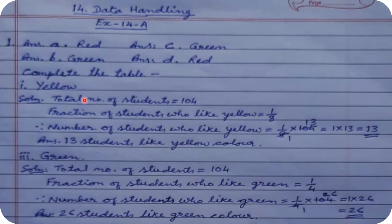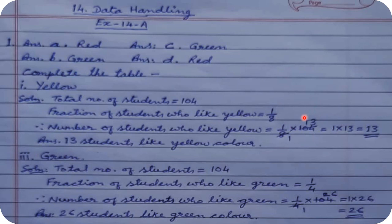Purple is the same as yellow because purple also covers 1/8 of the circle, so the number of students who like purple is calculated the same way — 1/8 of 104 = 13. For red, half of the pie chart is covered by red, so number of students who like red = 1/2 of 104 = 52. You can calculate that yourself. Thank you.